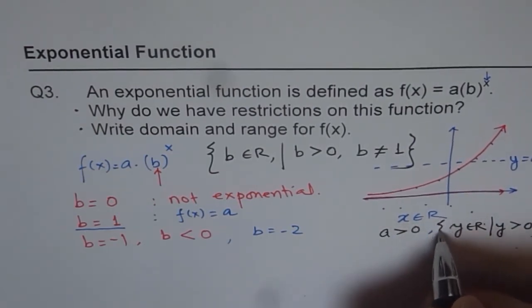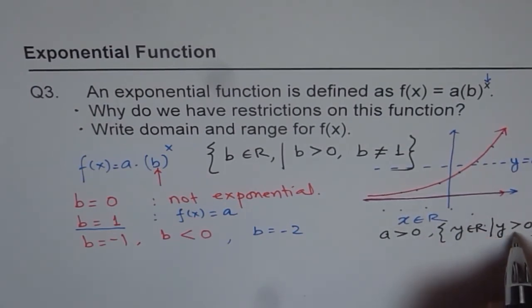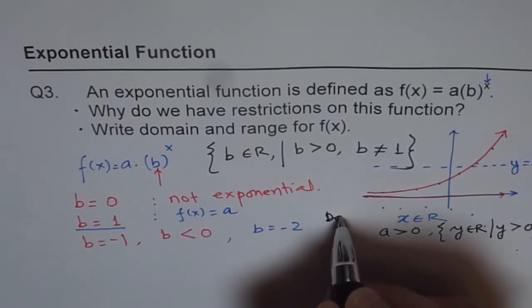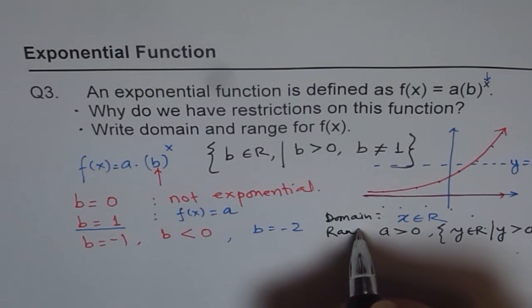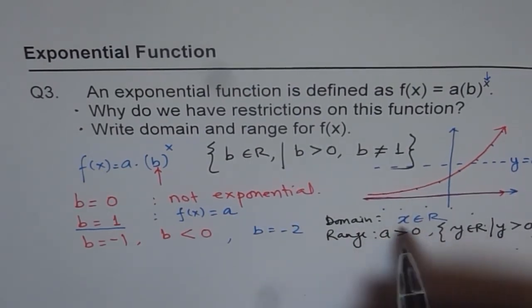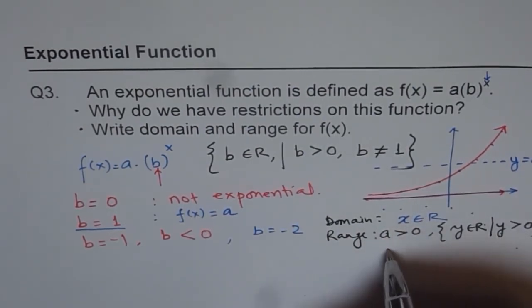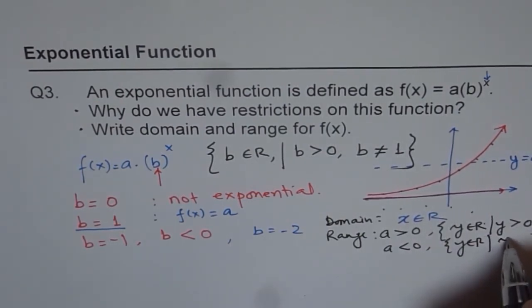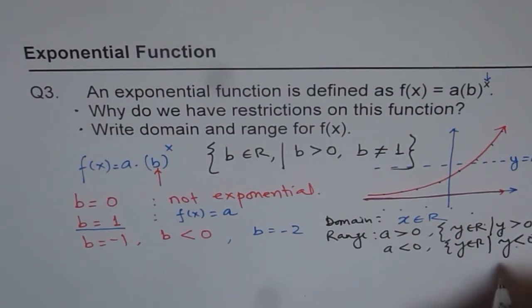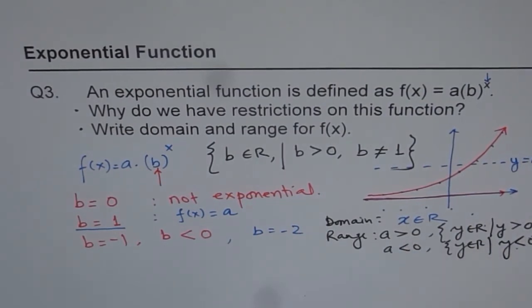So that is when a is positive. But if a is negative, then it is less than 0. However, the domain is always all real numbers. So that is the domain and the range really depends on a. So when a is positive, it is this. And when a is negative, then the range is y belongs to real number, where y is less than 0.